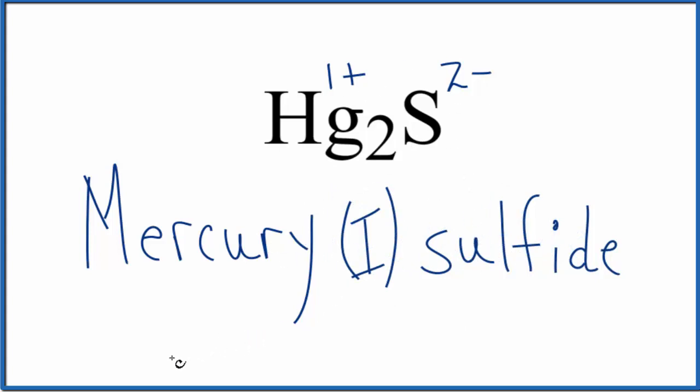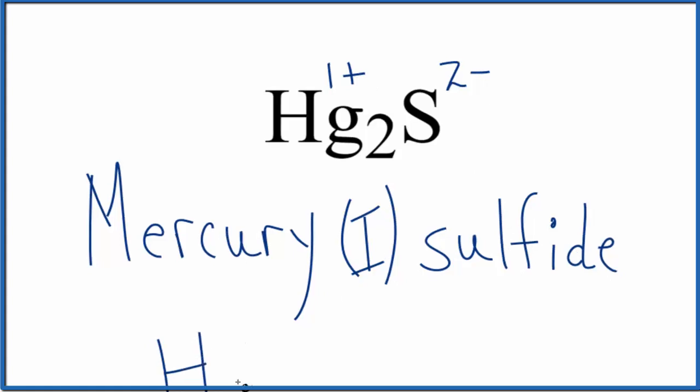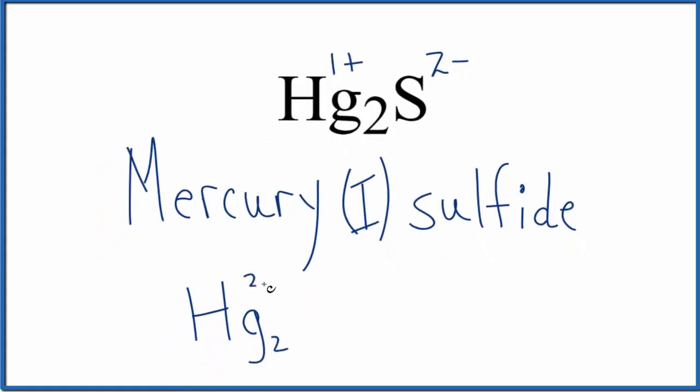We should note with mercury, the mercury(I) ion is Hg₂²⁺, so each one of the mercuries is 1+, but this whole thing stays together, it's kind of like a polyatomic ion almost.